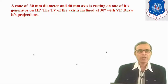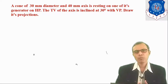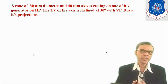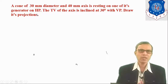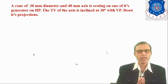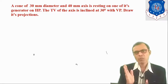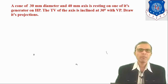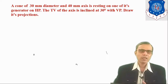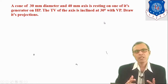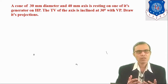In the second stage, consider the inclination angle with HP. If the inclination angle is not directly given, there may be some condition relating to HP. Here, the condition is it is resting on one of its generators on HP. So in the second stage, we will keep it on HP such that one of its generators remains on HP. The final stage condition is the top view of the axis inclined at 30 degrees with VP.